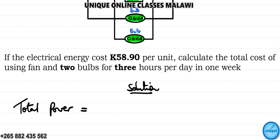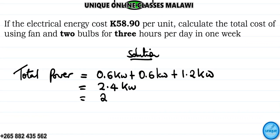Total power is 0.6 kilowatts plus 0.6 kilowatts, then plus 1.2 kilowatts. So if you add 0.6 plus 0.6, that's 1.2. 1.2 plus 1.2 equals 2.4 kilowatts. So 2.4 kilowatts is the same as 2,400 watts.